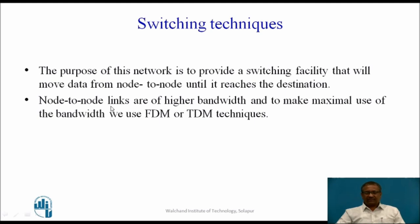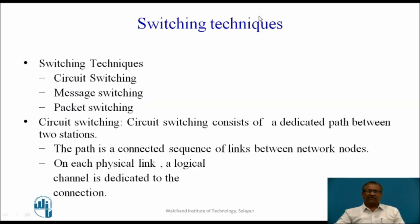Node-to-node links are of higher bandwidth. Inside the communication network, each node is connected to every other node, which is why these links are of higher bandwidth. To make maximal use of the bandwidth, we use FDM — frequency division multiplexing — or TDM — time division multiplexing — techniques to improve the performance of a channel. Now, there are three main switching techniques: circuit switching, message switching, and packet switching. In this lecture we will discuss circuit switching, and in the next lecture we will see the other techniques.